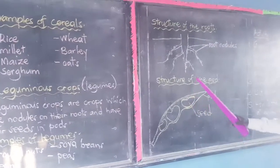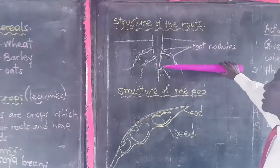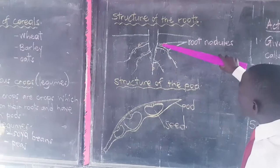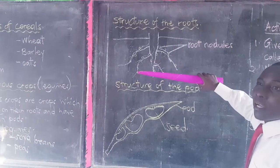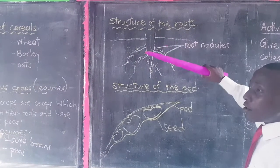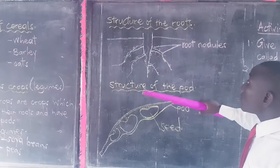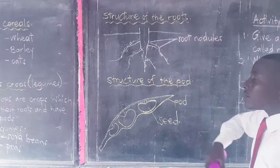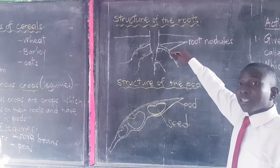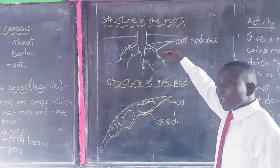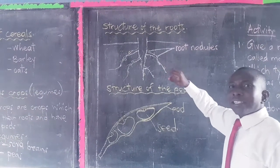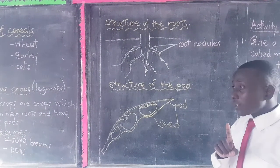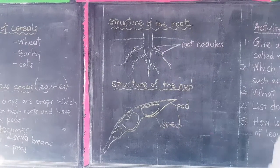Now the nodules — the structure of their roots is here. This is the root system of the leguminous crops. They have those small balls. Sometimes they will ask you: what do you call the small balls found on the root system of the leguminous crops? They are called root nodules. These smaller balls have something inside — that is nitrogen-fixing bacteria. Those bacteria fix nitrates in the soil. That is the importance of these nodules.